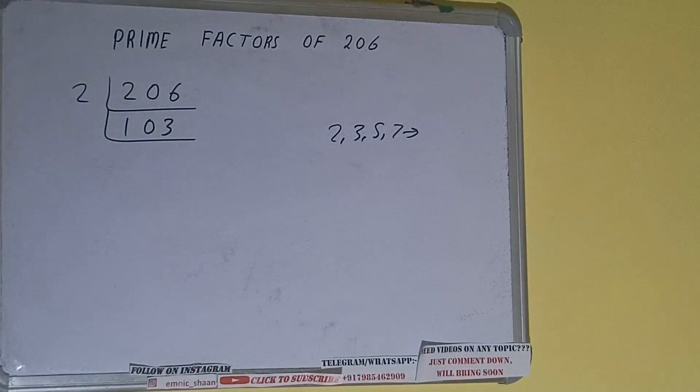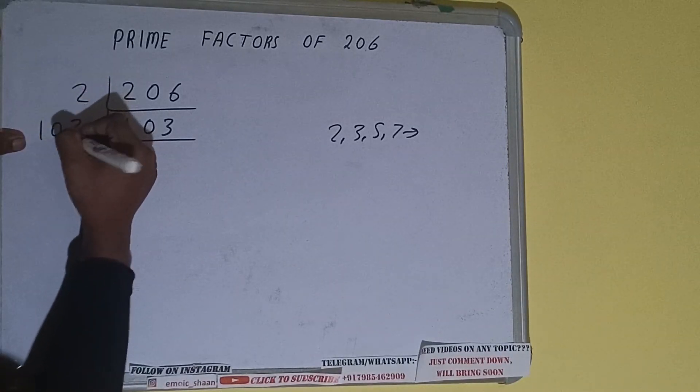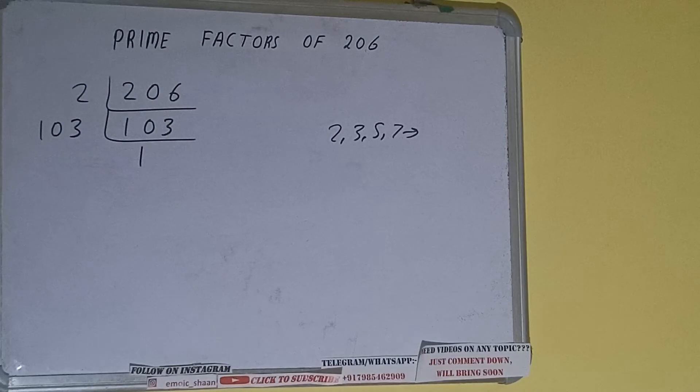Is 103 divisible by 2? The answer is no because the number is odd and the number 103 is also a prime number so it is only divisible by itself that is 103 and once we do so we'll be getting 1.